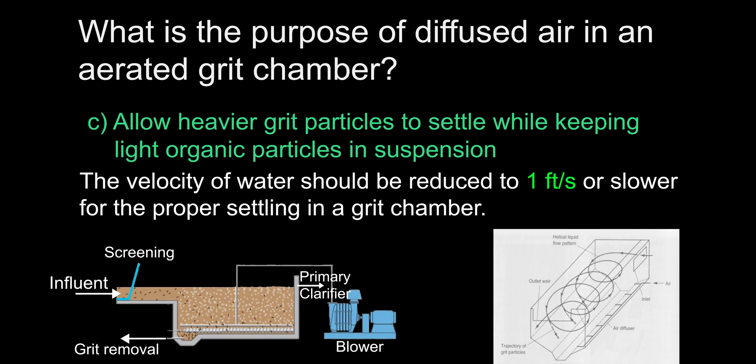Aerated grit chambers are effective at slowing the velocity of water and allowing grit entering a treatment plant to settle out before damaging downstream equipment and processes. The air diffusers are set up perpendicularly to the direction that influent enters the chamber. This creates a helical pattern as displayed in the picture on the right. The goal of this is to reduce the velocity of water to one foot per second or slower — I've highlighted one foot per second in green because that's an important measurement frequently asked about on exams.